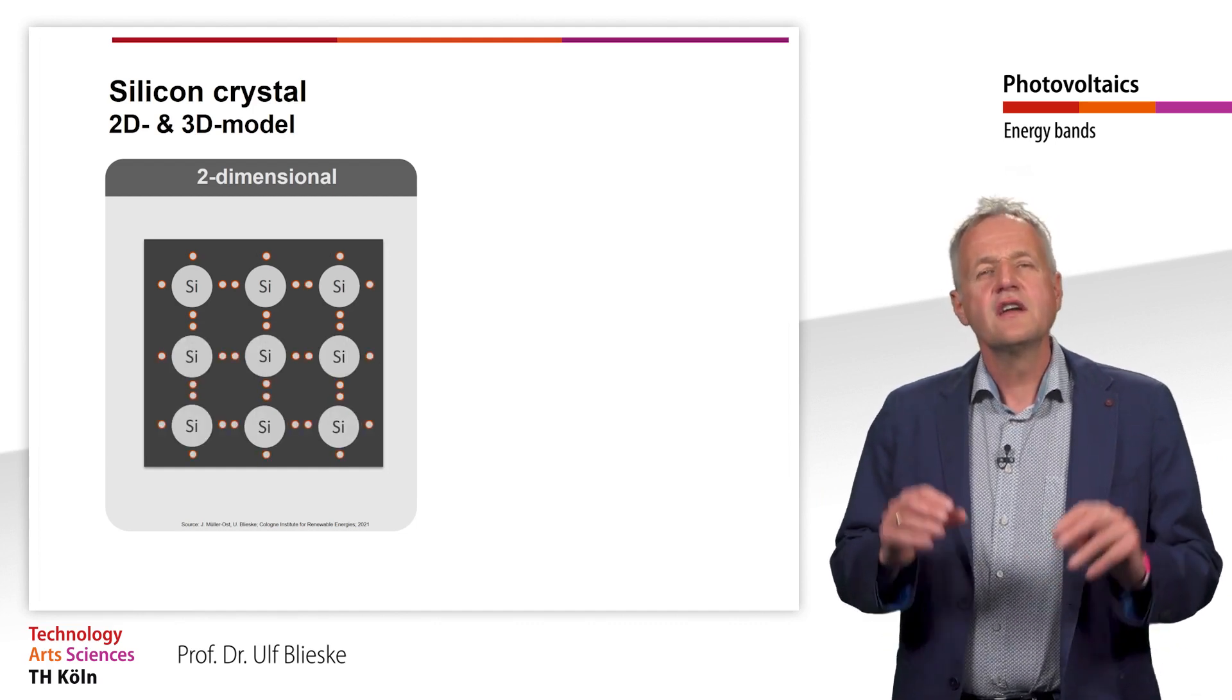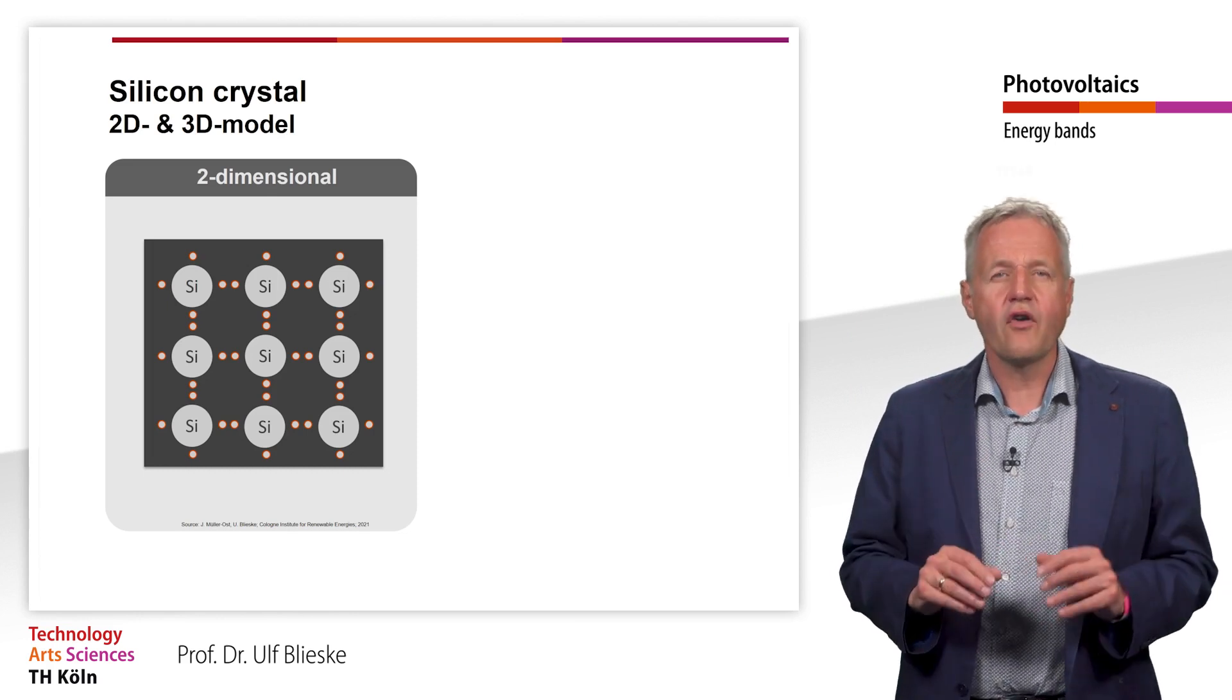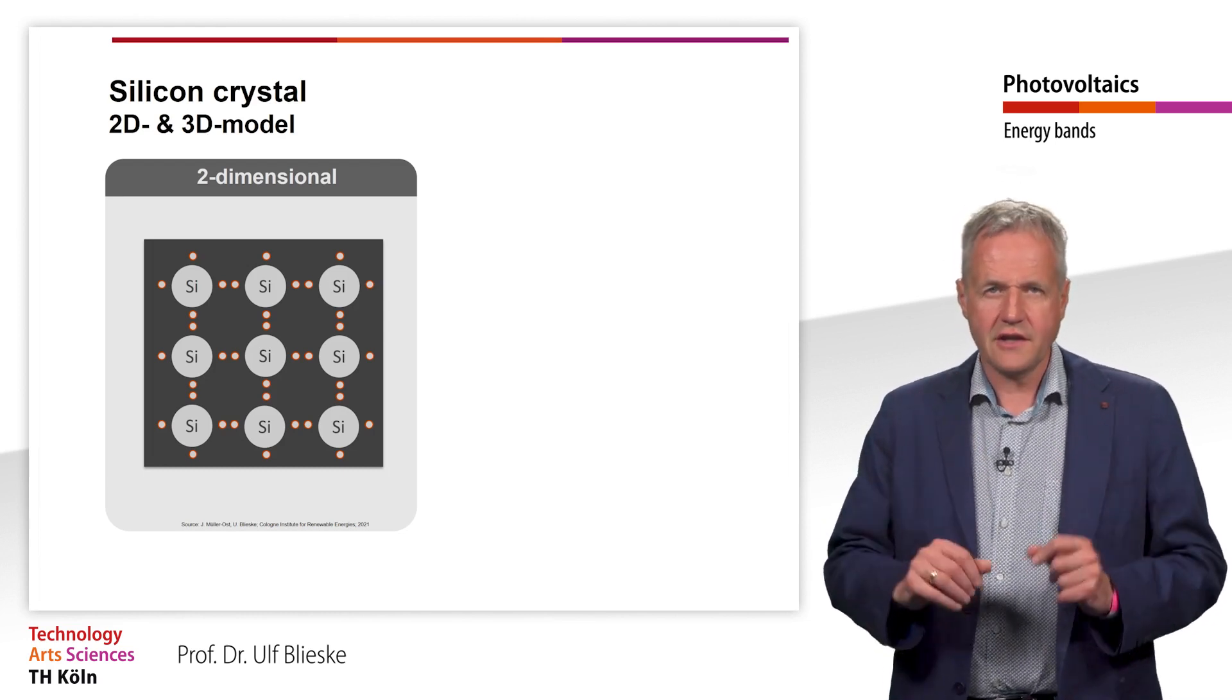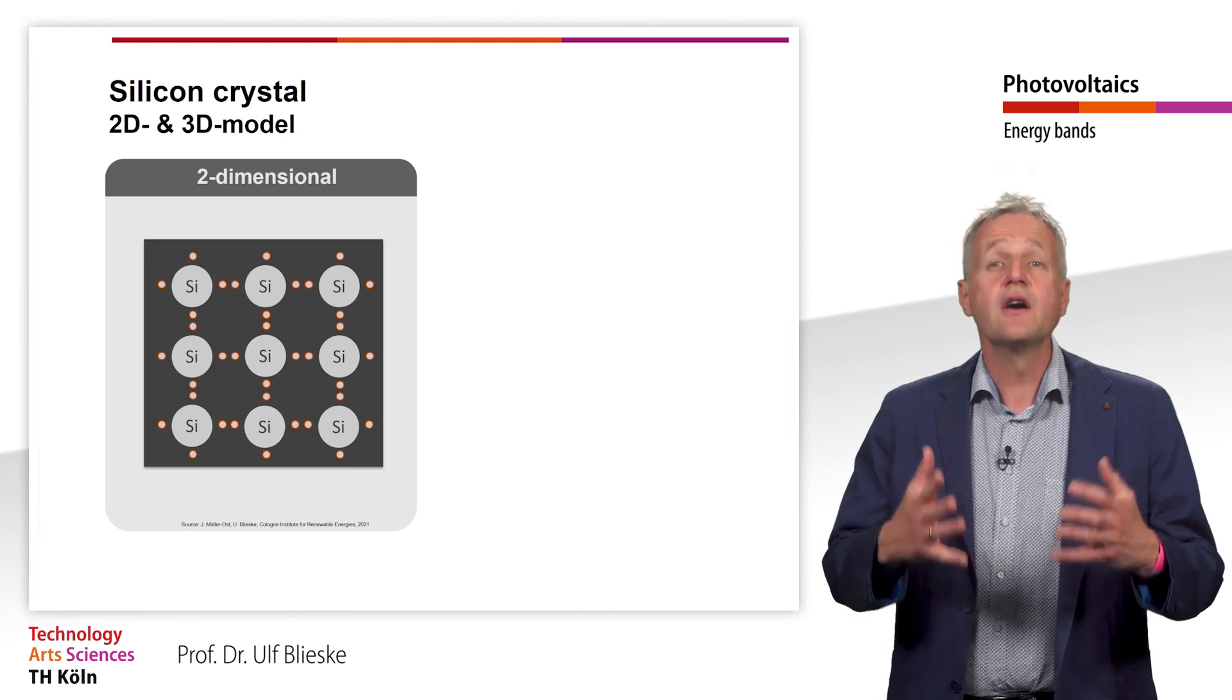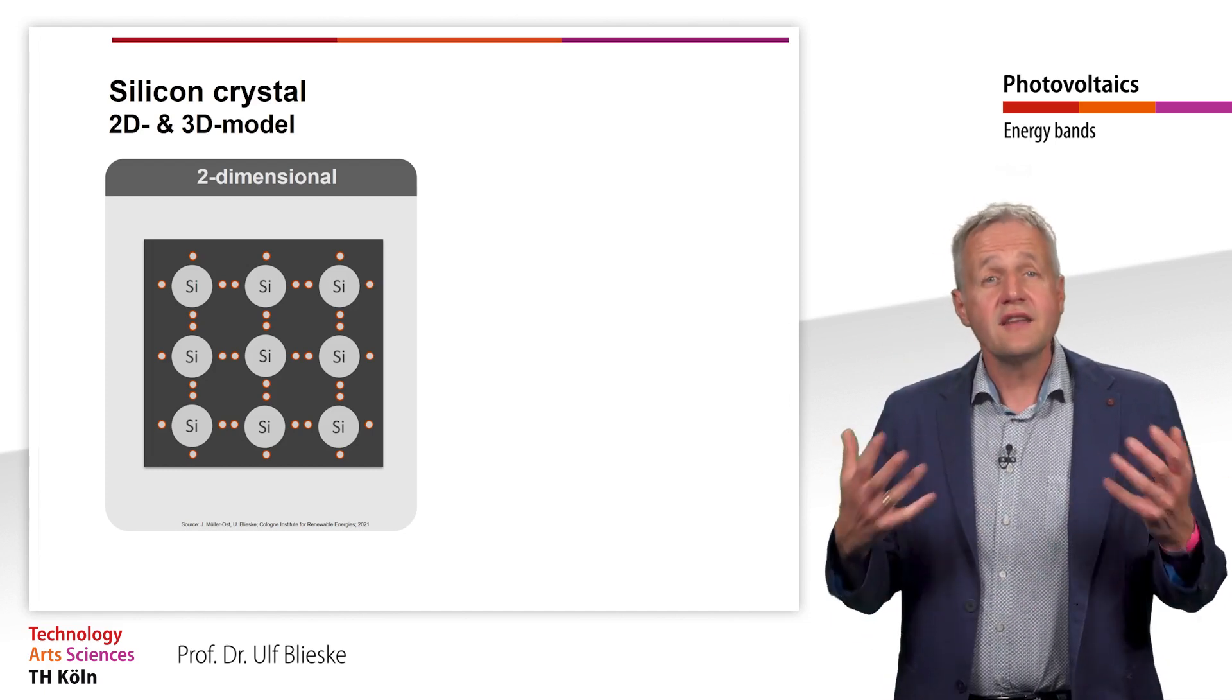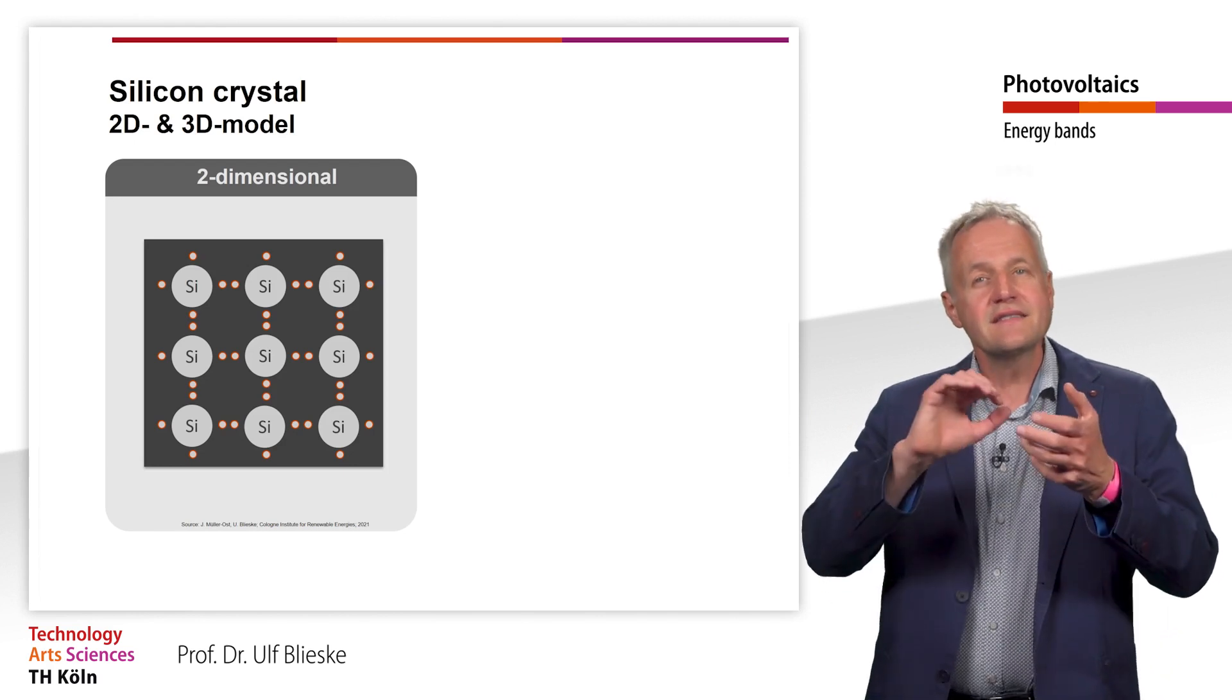In a silicon crystal, each silicon atom is surrounded by four neighboring silicon atoms. Silicon atom now shares one of its four valence electrons with each of these neighboring atoms. The other silicon atoms also share their valence electrons. This type of bond, where two valence electrons are shared, is called a covalent bond. However, the single atom thinks that it owns both electrons and thus has reached the noble gas configuration. Such a bond, in which the noble gas configuration is reached, is very stable. The electrons are very strongly bound here.